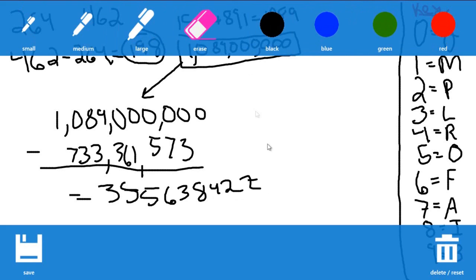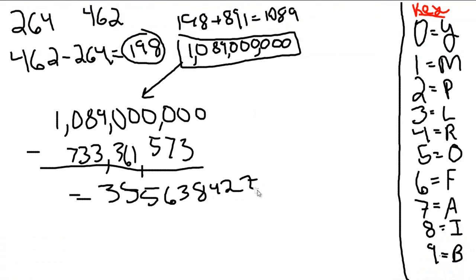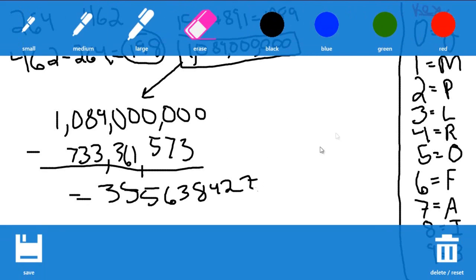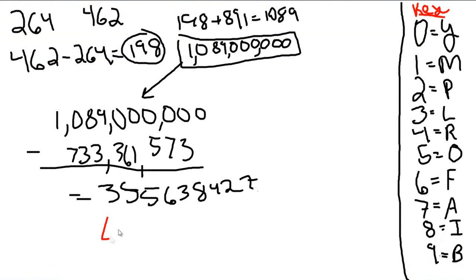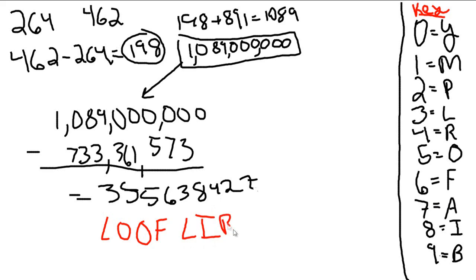The reason why I read it out like that and not as a number is because you're going to be translating this into a code according to the side. So what we have: 3 is L, two 5s in a row — even if one looks bad — are two O's, 6 is F, 3 is L, 8 is I, 4 is R, 2 is P, and 7 is A.